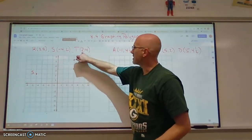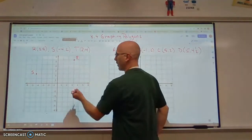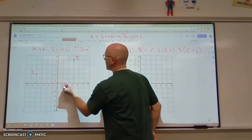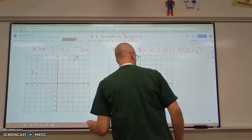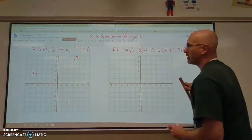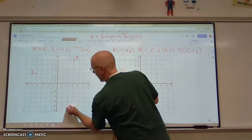And then we have point T. It's at 2, negative 4. So we go 2 in the x direction and negative 4 in the y direction. And now we are going to label that point T.